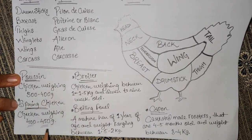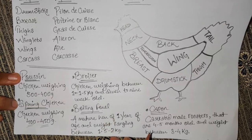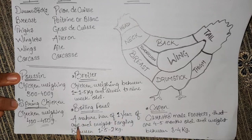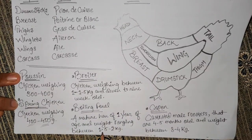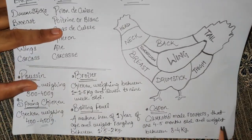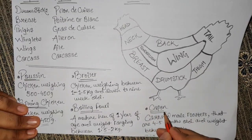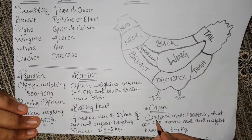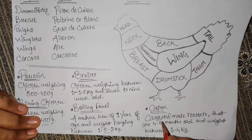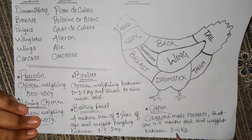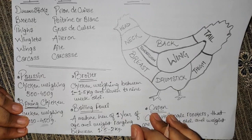The boiling fowl is a mature hen of one year of age, weighing between 1.5 to 2 kg. Then we have the capon — a castrated male bird. The testicles have been removed, so it's called a castrated male. These are four to five months old and weigh between 3 to 4 kg.